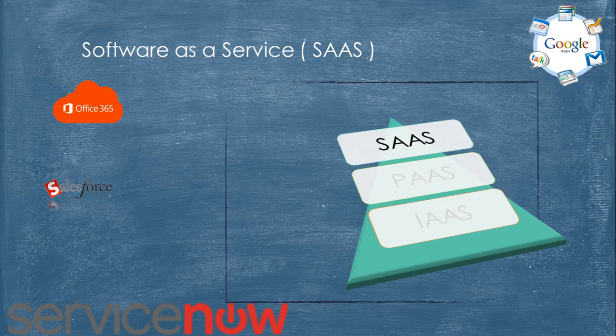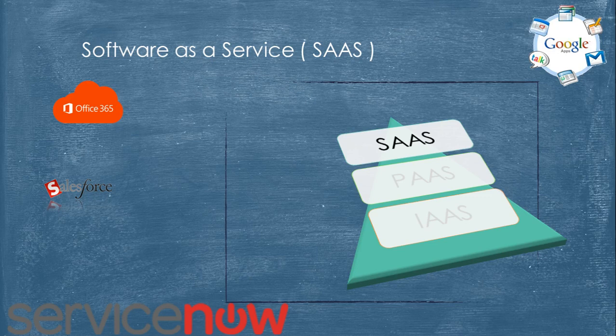Office 365 is hosted by Microsoft, so you do not have to install Microsoft Exchange on your premise. You can access corporate emails with a browser, type your user ID and password, and based on the licenses, you get the application. Similarly, you can access CRM-based applications like Salesforce and ServiceNow. Other examples include Games, CRM or Customer Relationship Management, Enterprise Resource Planning, Invoicing applications like QuickBooks, HR applications, Talent Acquisition applications, and Service Desk Management applications like ServiceNow — all provisioned through Software as a Service.